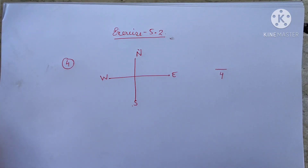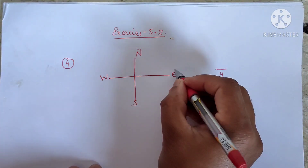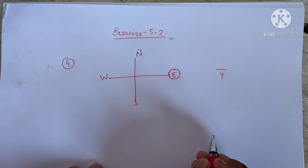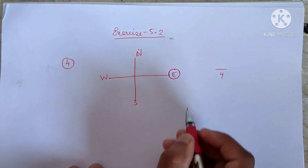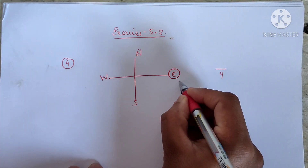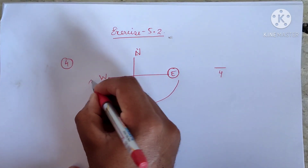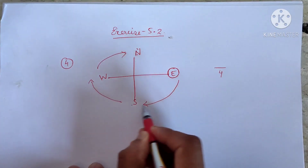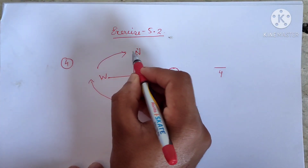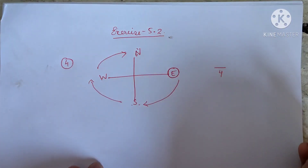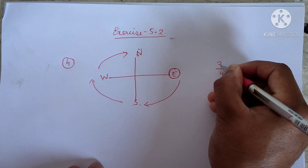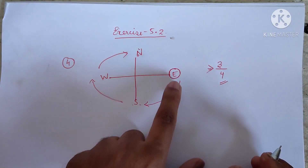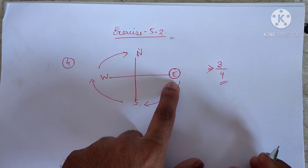For part (a), we are standing in the east and turning clockwise to face north. Clockwise goes in this direction. To face north, we need to turn three times: first, second, third — then we reach north. So our total revolution is three by four.